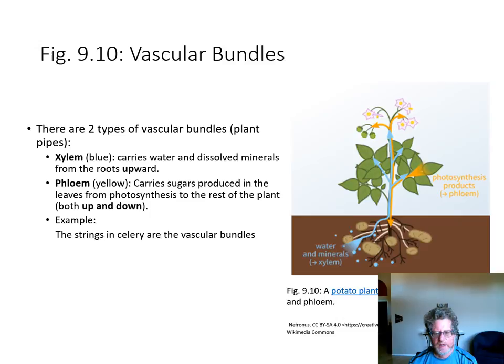There are two kinds of pipes in plants called xylem and phloem. Just like hot and cold water have to be carried in different pipes, the xylem carries water and nutrients from the soil up to the leaves, and the phloem carries sugars from the leaves down to the roots — but at times phloem will also carry sugars to the flowers and fruits, so phloem goes up and down.